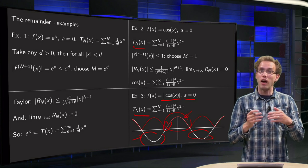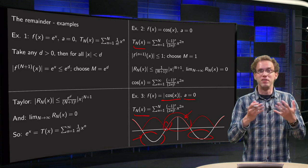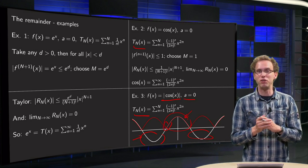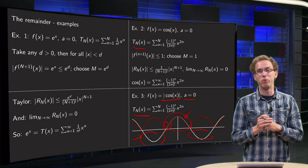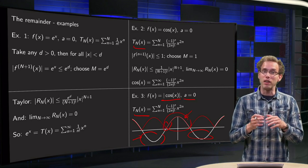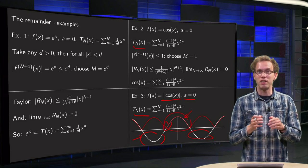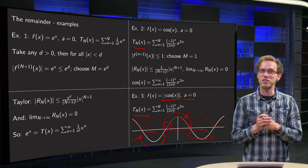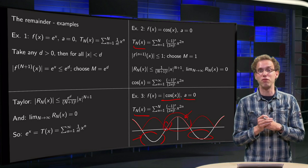So you see, for the nicely behaving functions, your Taylor polynomial will approximate your function well, but as soon as you get something like this, like those cusps, then you have to be really careful with this.